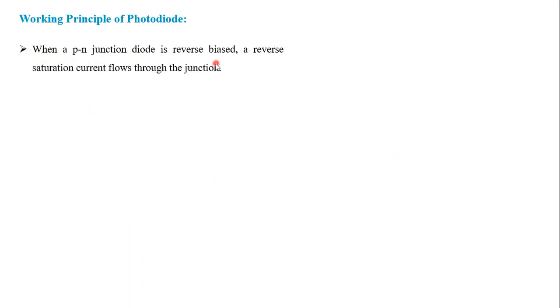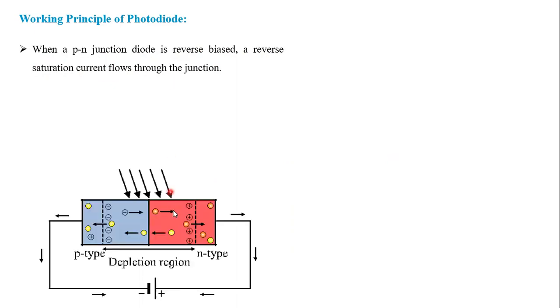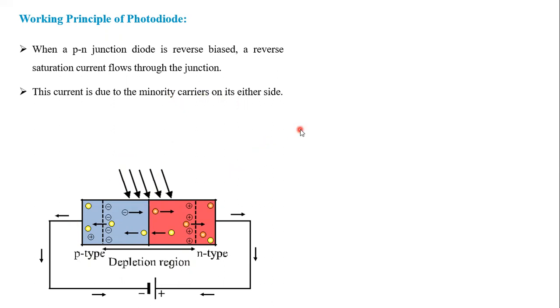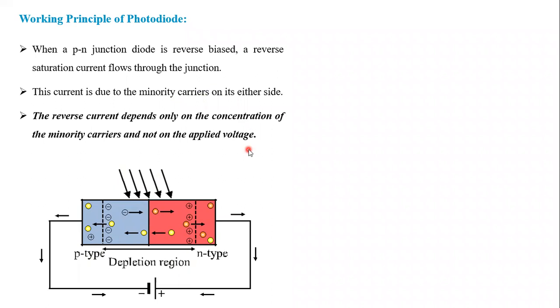Let's see the working of the photodiode. When the p-n junction diode is in reverse bias, a reverse saturation current flows through the junction. When light is not incident, some reverse current still exists. That current is due to the minority carriers on the p-side and n-side, and this current is called dark current. The reverse current depends only on the concentration of minority carriers and not on the applied voltage.